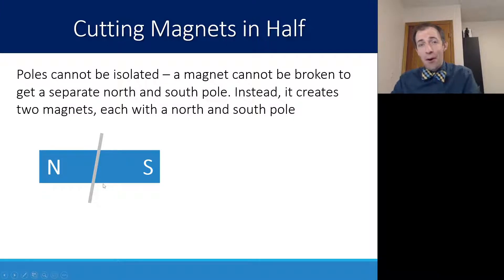One might think if you got it straight down the middle, you'd have a north pole side and a south pole side as separate pieces. But instead, when you cut it in half, what you do is you actually create two different magnets.